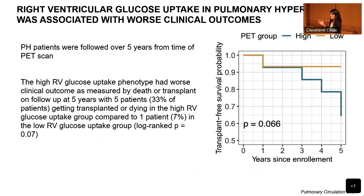We followed this cohort of 30 patients who all had a PET scan over five years, looking at clinical outcomes of death or transplantation. The group with high RV glucose uptake at baseline had worse outcomes — 33% of patients dead or transplanted at five years, compared to only 7% in the low RV glucose uptake group. So RV glycolysis was able to predict outcome at five years in our cohort.